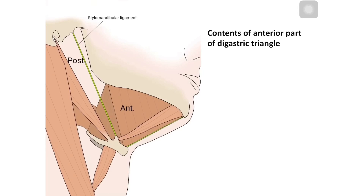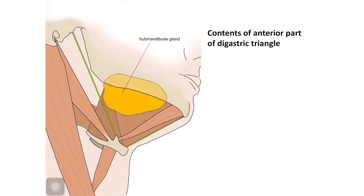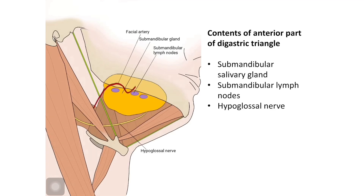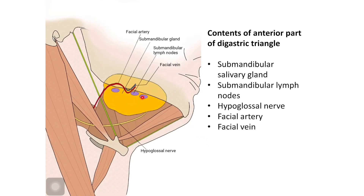The contents of the anterior part of the digastric triangle are: the submandibular salivary gland, the submandibular lymph nodes, the hypoglossal nerve, the facial artery, and the facial vein — five contents in total.